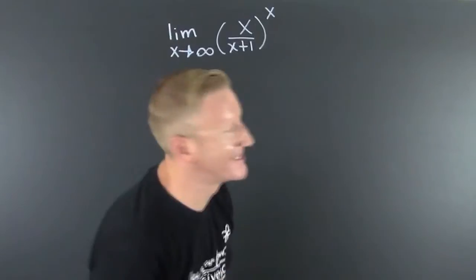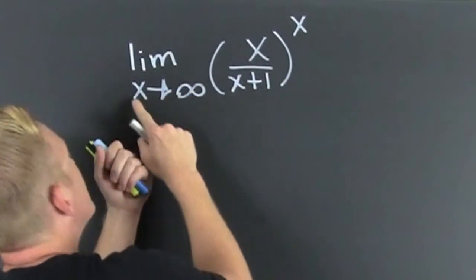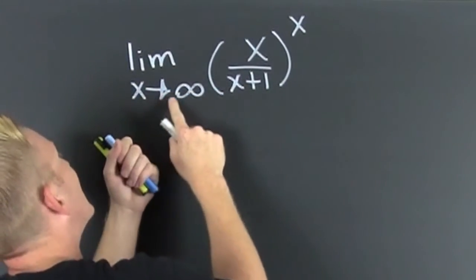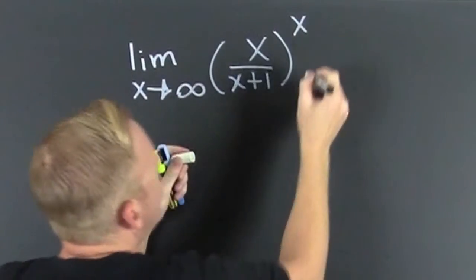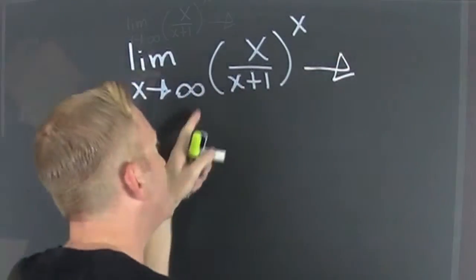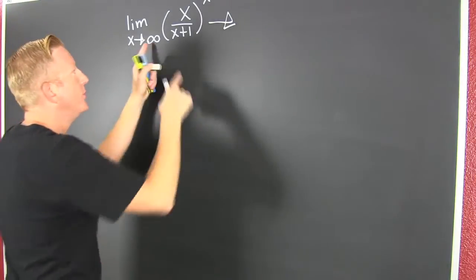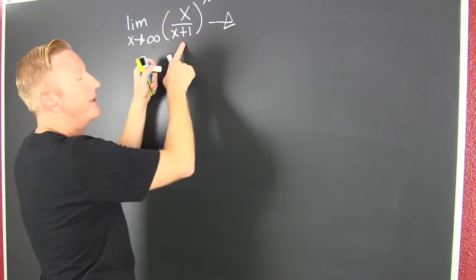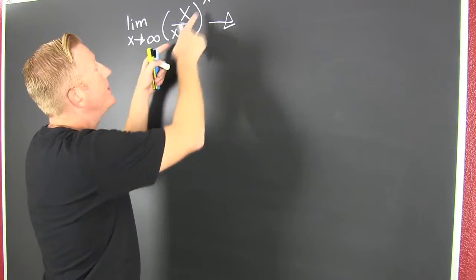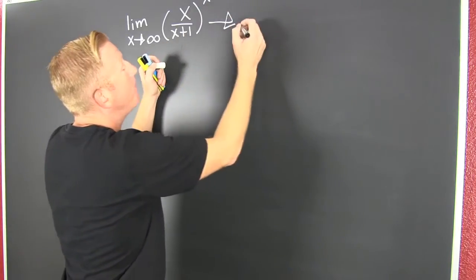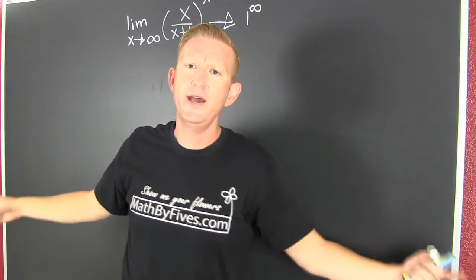My English is so good. What am I talking about? I'm talking about this guy right here. So I'm looking at the limit as X approaches infinity. It's one to the infinity power.